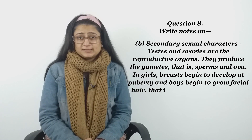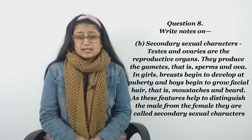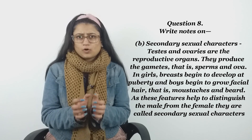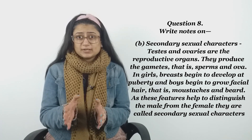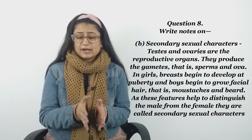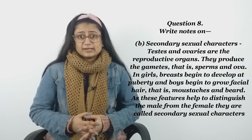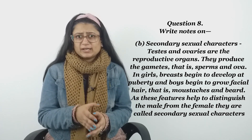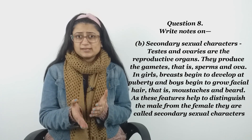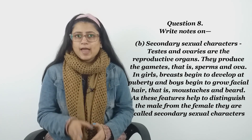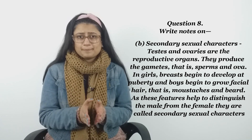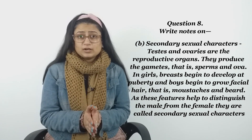Part B: Secondary sexual characters. Testes and ovaries are the reproductive organs. They produce the gametes, that is sperms and ova. In girls, breasts begin to develop at puberty, and boys begin to grow facial hair — that is moustaches and beard. As these features help to distinguish the male from the female, they are called secondary sexual characters.